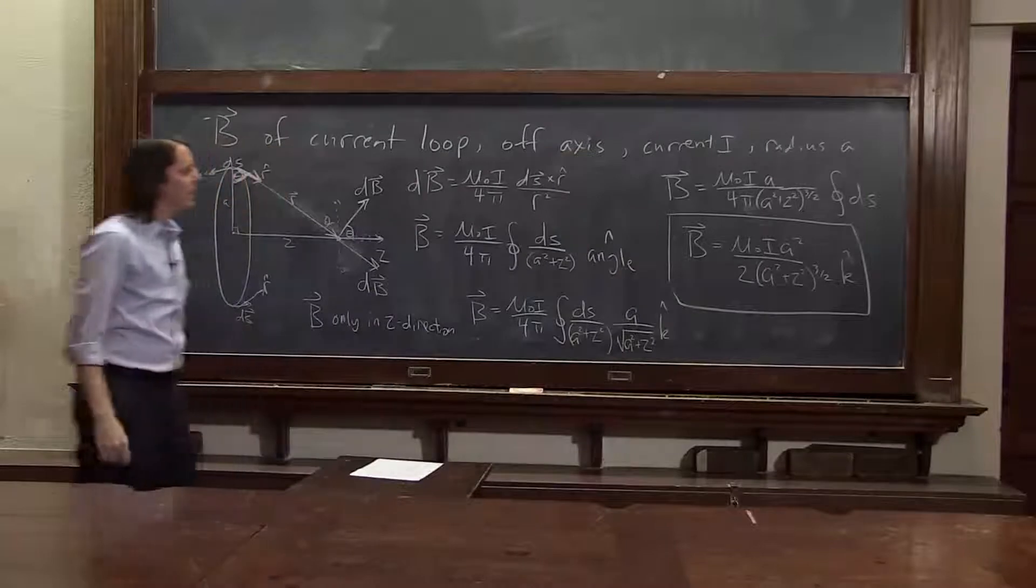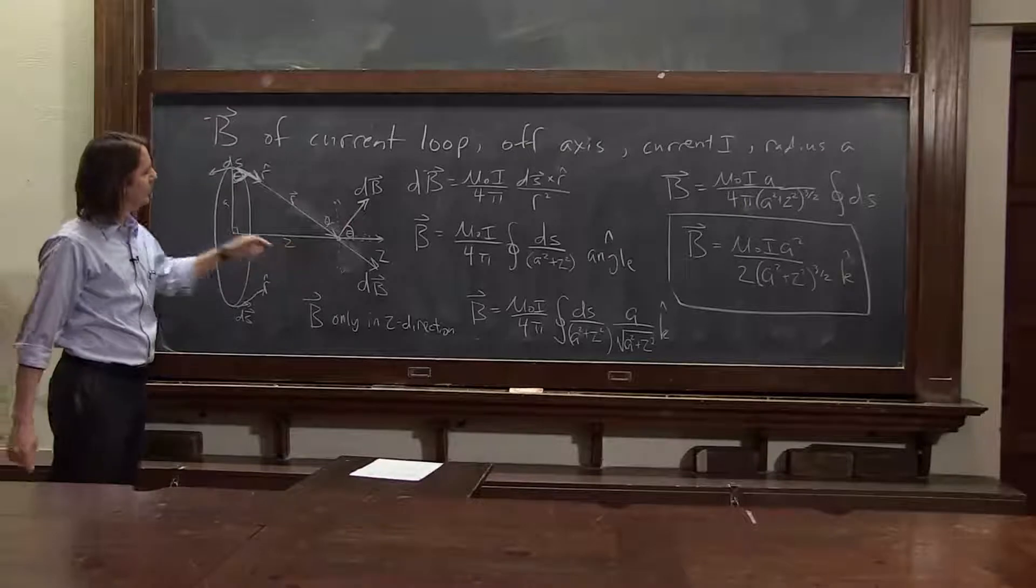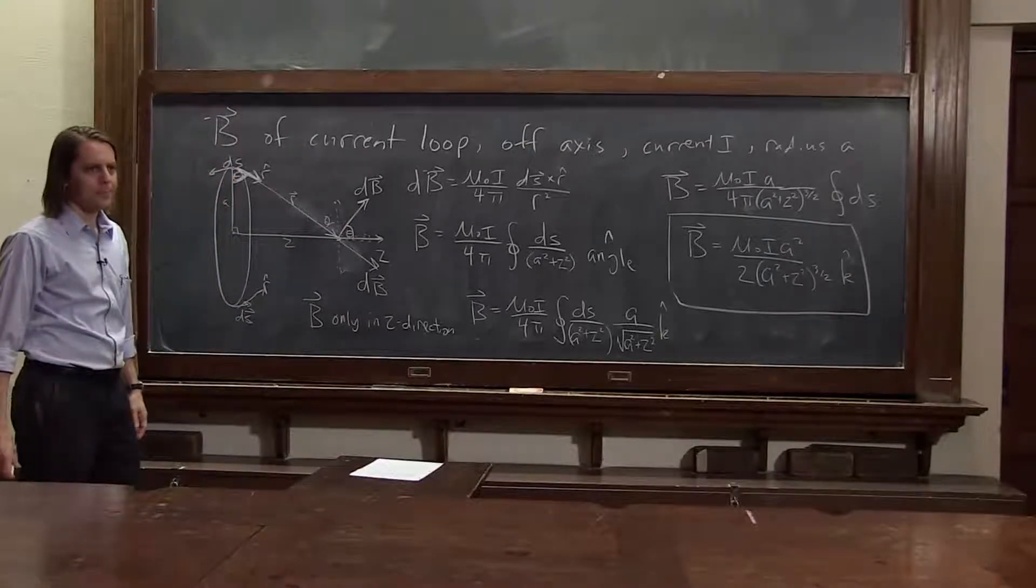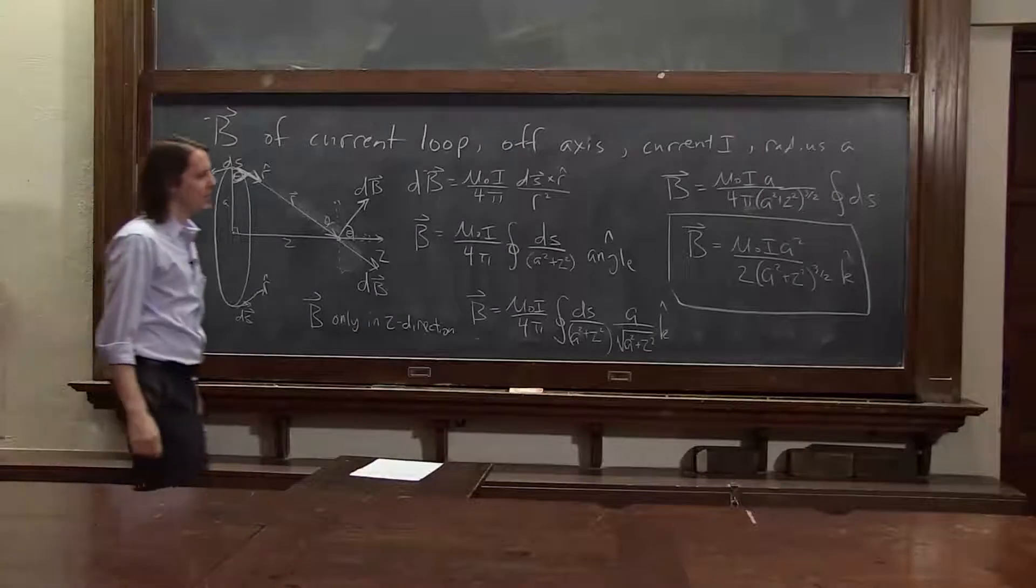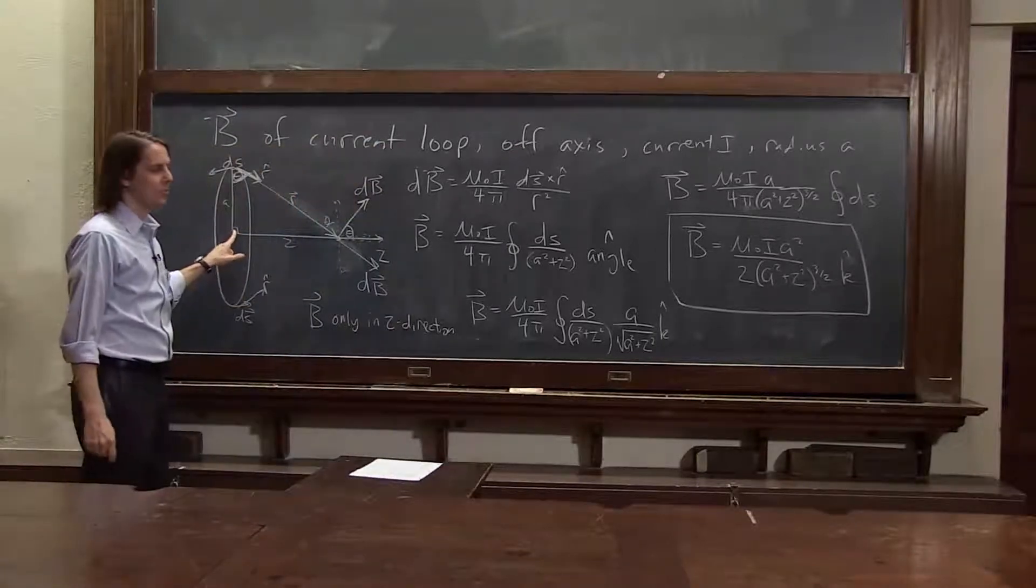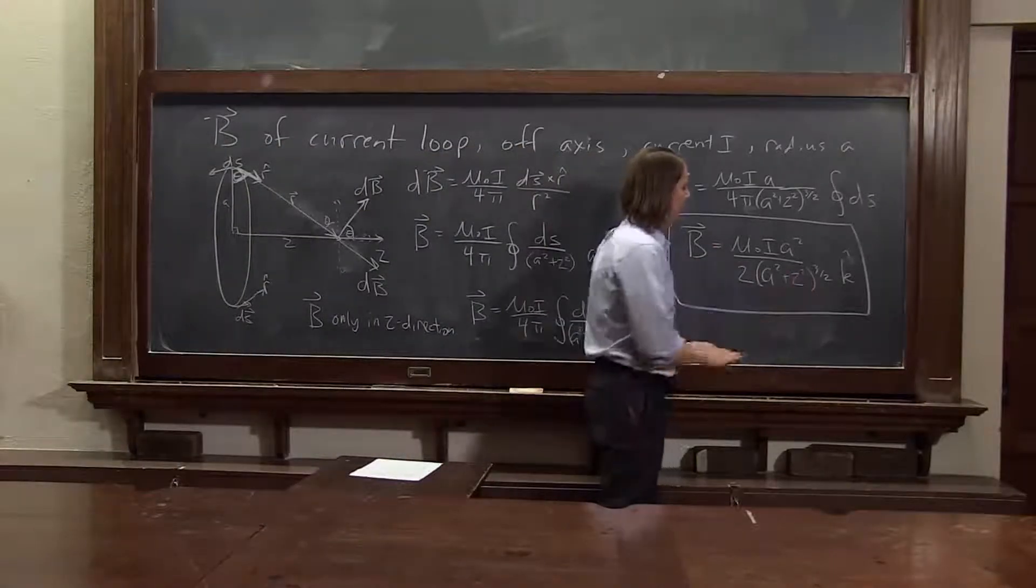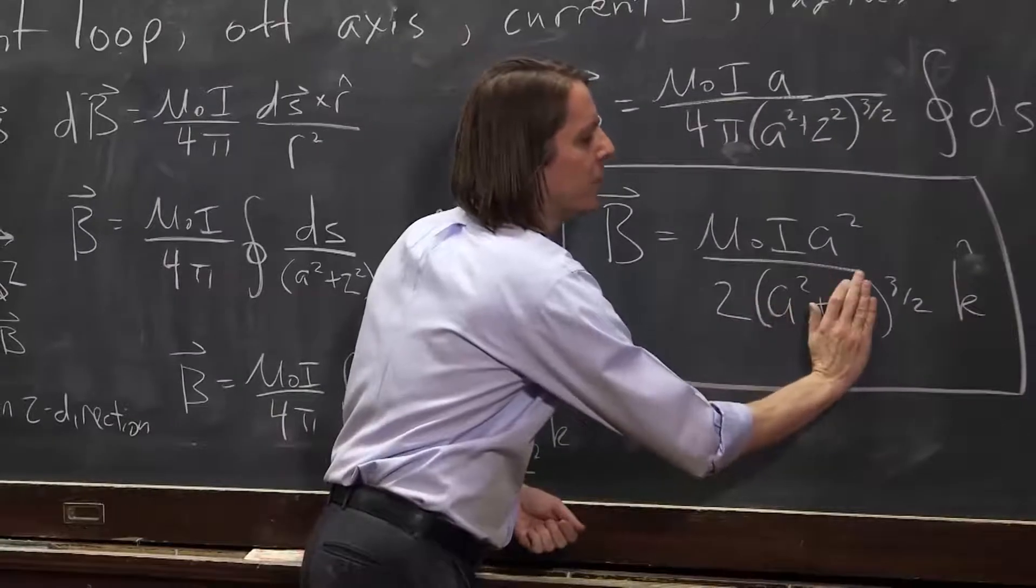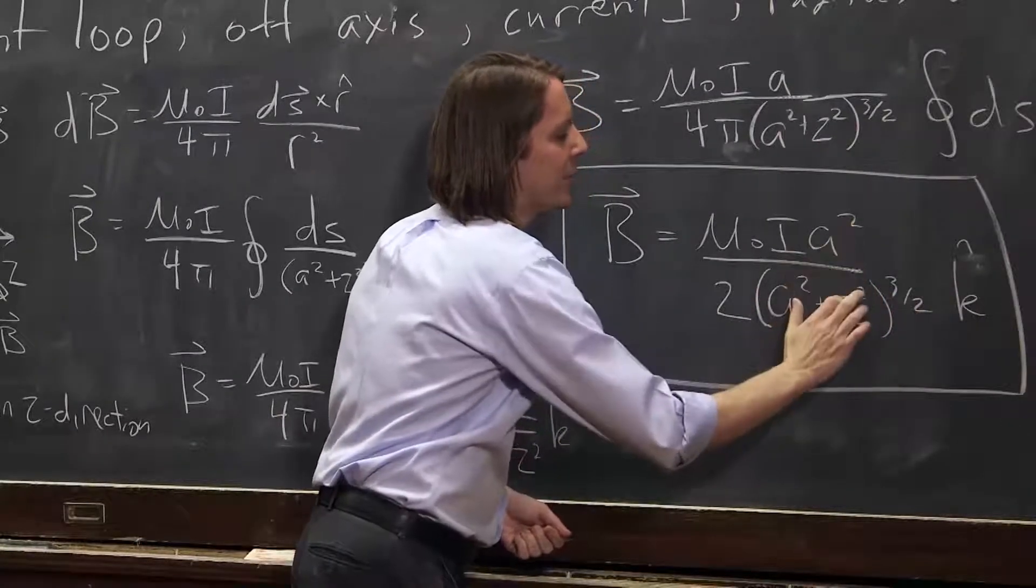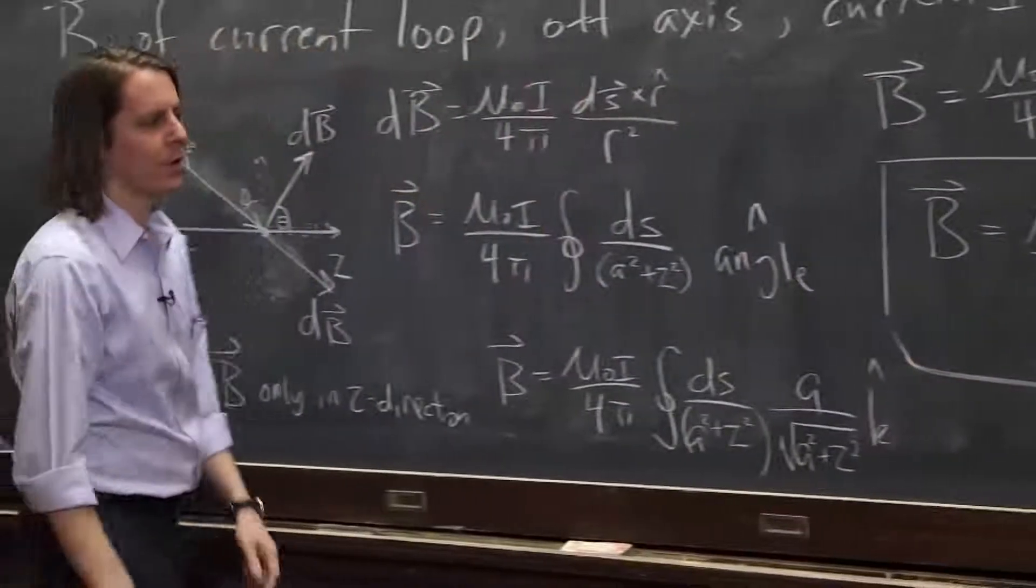So there you go. Now, not only do we know the b-field in the center of the loop, we know it for all distances along the axis of the loop. Now, whenever you do a problem like that, there's a way to check it. One way to check it is, does it match our answer here in the center of the loop? Well, that's simply the answer when z is 0. So let's let z be 0. z goes away. a squared, square root of a squared is a cubed. a cubed in the bottom, a squared in the top, it becomes mu naught i over 2a. It worked. It's even in the right direction, in the k direction.